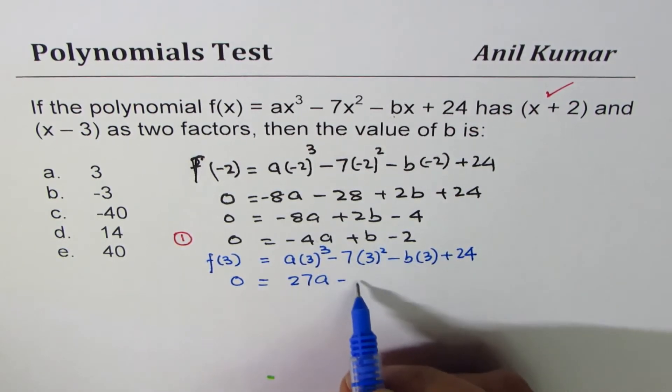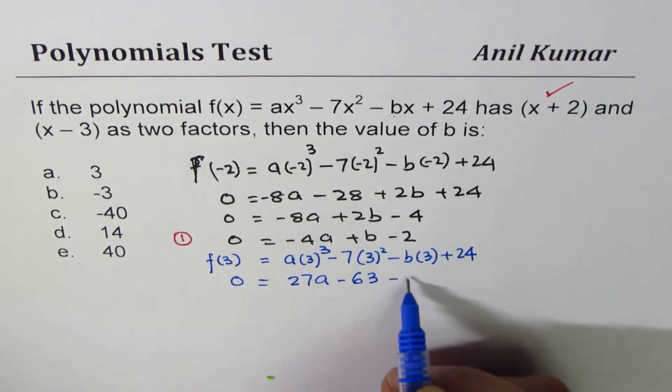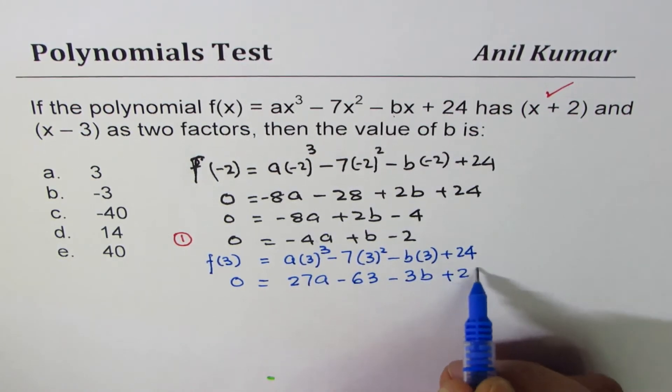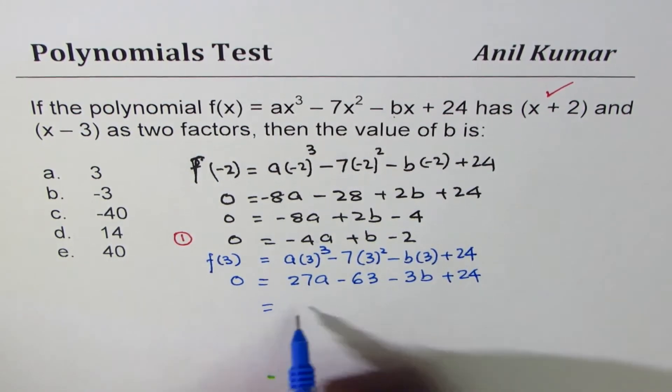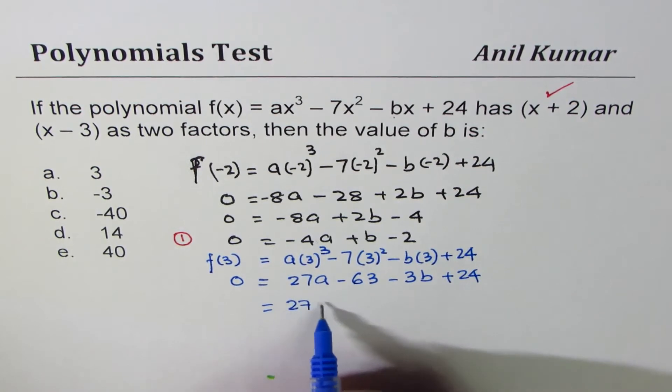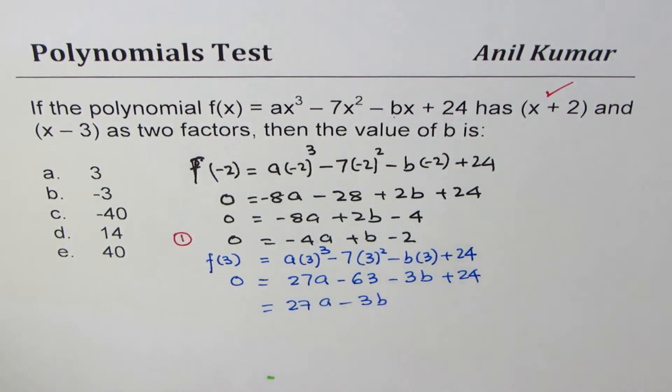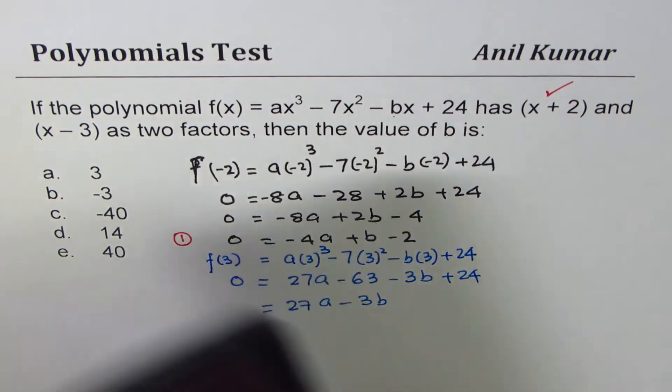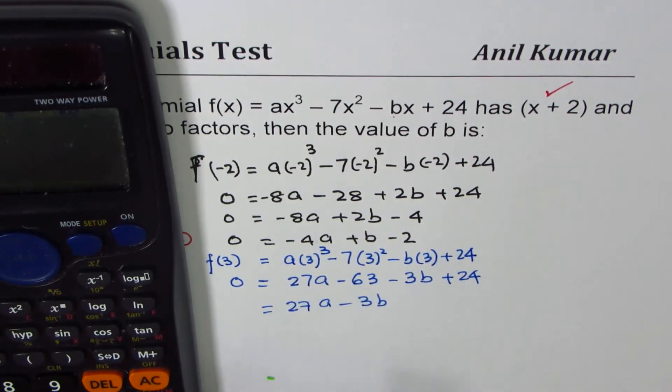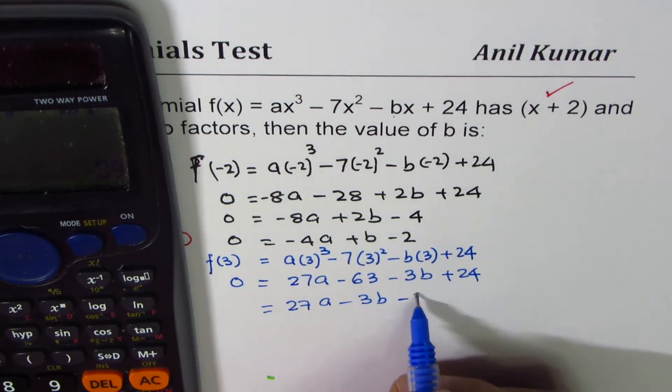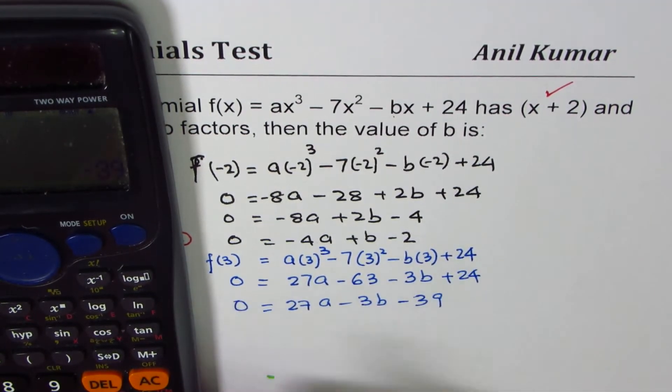and that has to be 0, since it is a factor. So, this is a factor, 27a - 9 times 7 is 63, -3b + 24, and that gives us 27a - 3b, and let's combine these two terms. Let's use calculator, 24 - 63, -39,